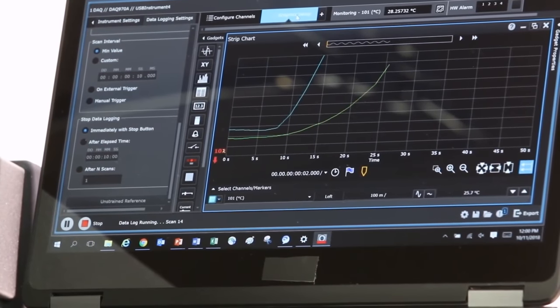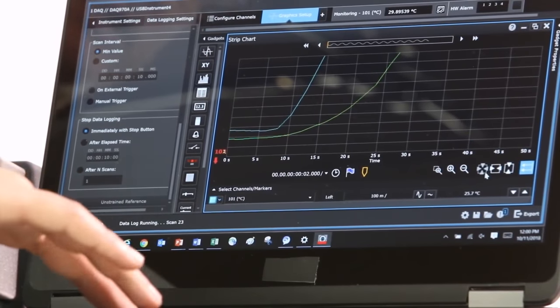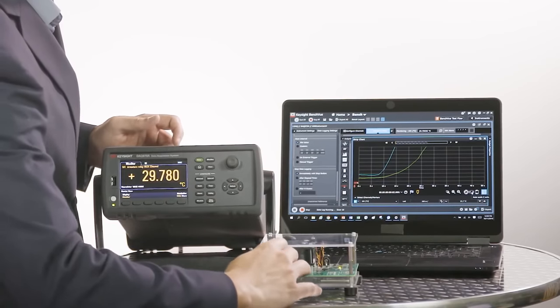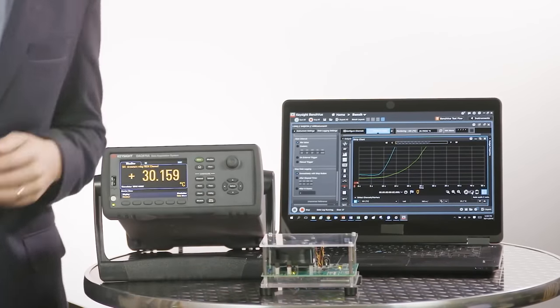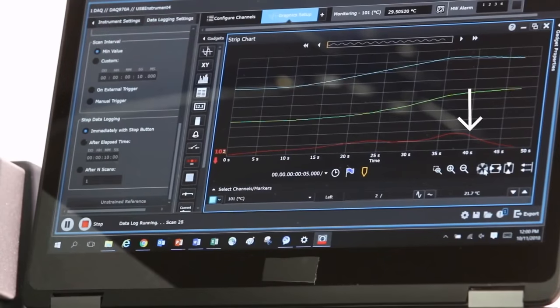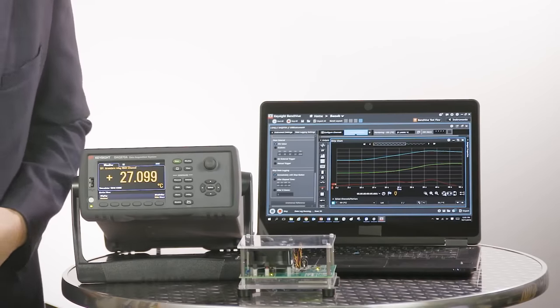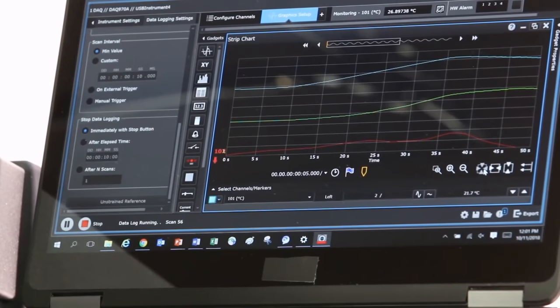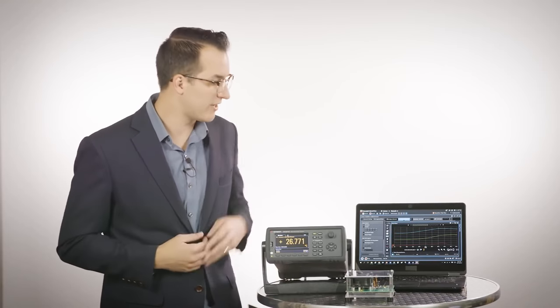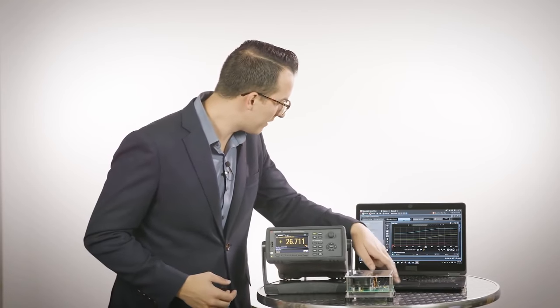Since our graph has gone off screen, I'm going to go ahead and auto scale in BenchVue and I'm going to turn on my system's fan and we should now see the temperature start to drop. You can see the fan's had a pretty big impact on our temperature, so for today's purposes that is plenty of information for us.